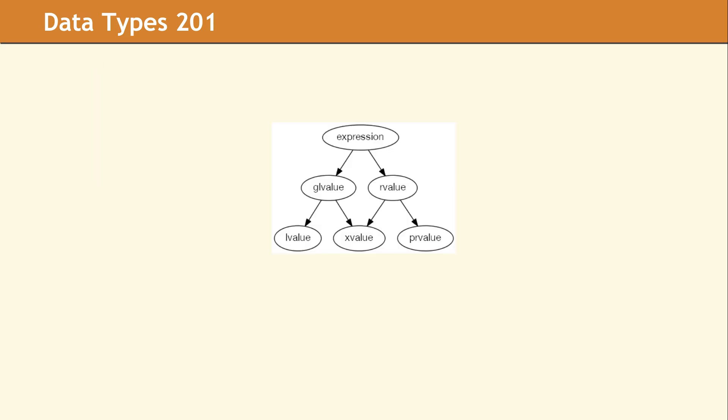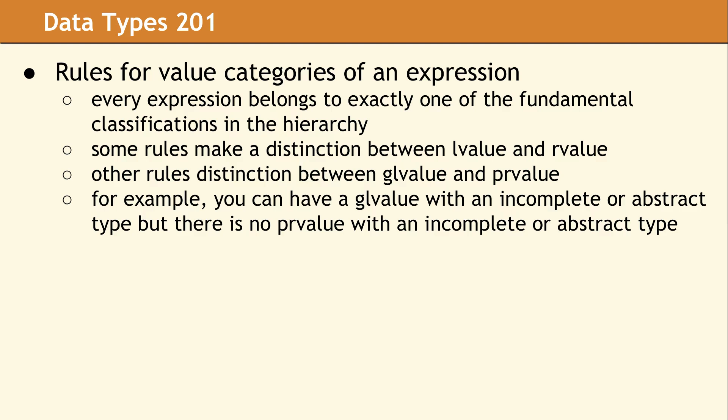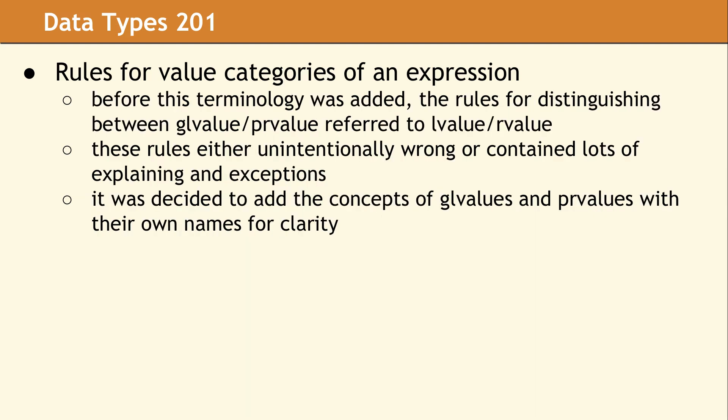Again, these specific value categories are not that important in most cases unless you're writing a compiler. The major distinction that you need to understand as a programmer is the distinction between L value and R value. There are many additional rules about how value categories operate and when they're produced in the standard. Again, these are not typically used in programming. They are more for the interest of the compiler. The important thing to note is that many of these rules were refined in C++11 when they added the new value categories. And so many of these rules were actually phrased incorrectly in the standard. In C++11, this entire value category part of the standard is fully defined and implemented in a better fashion.